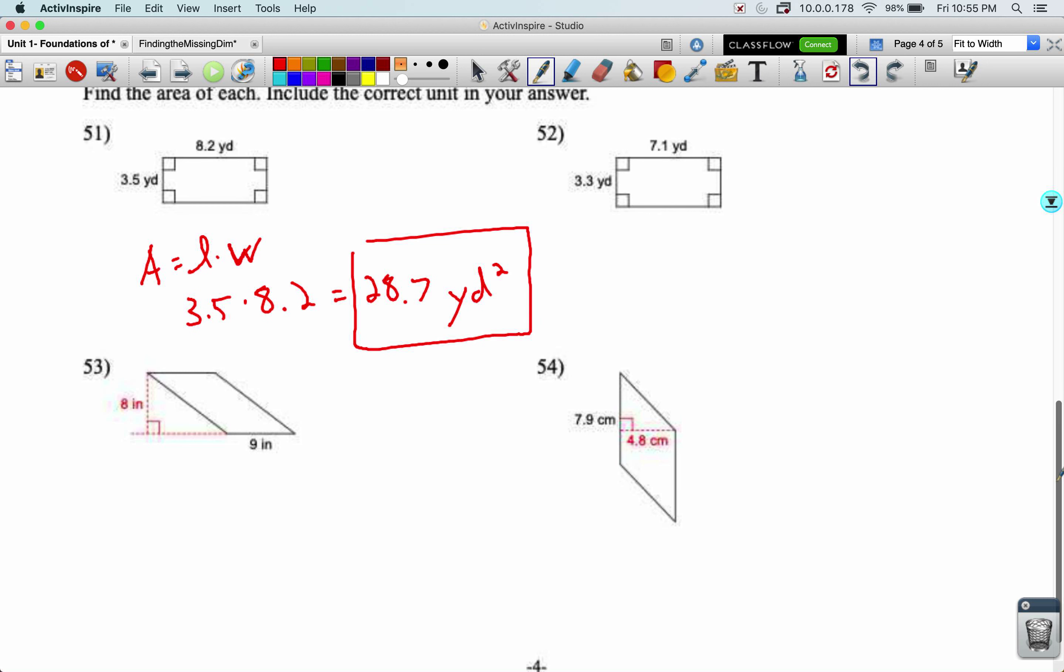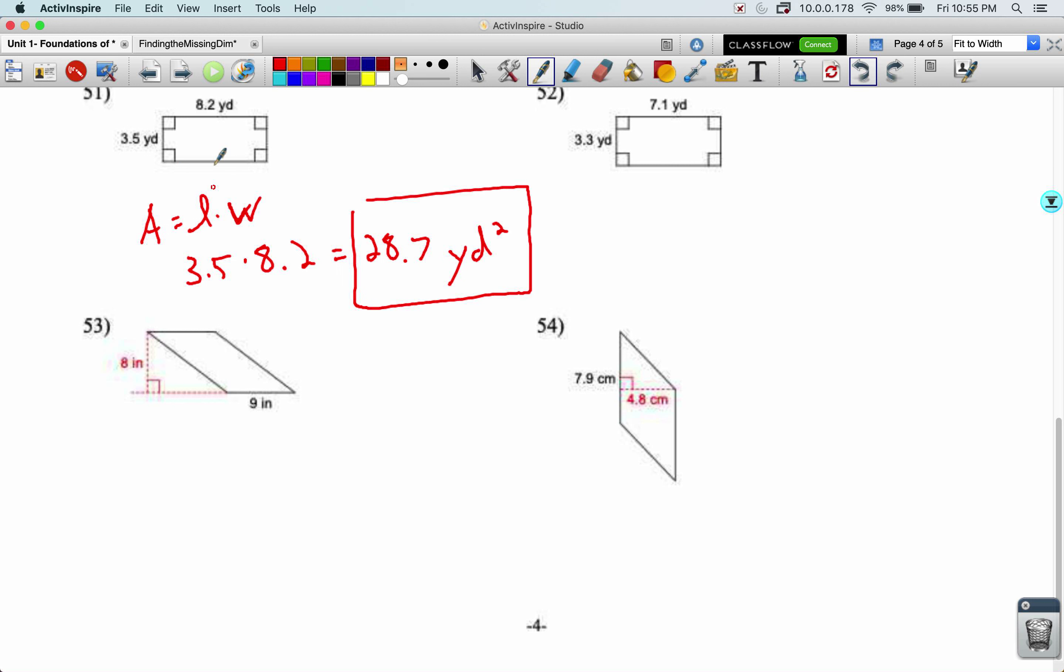With these parallelograms, we have to not think in terms of length times width, but in terms of base times height. The base and the height now need to meet a 90 degrees. So I'm going to multiply the two numbers we see here, the 8 and the 9. 8 times 9 equals 72. Look at the unit. Inches squared. Same thing here. Just multiply those two numbers.